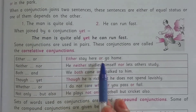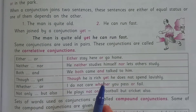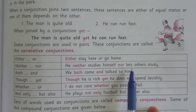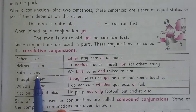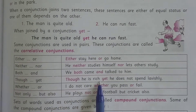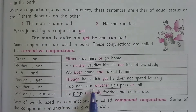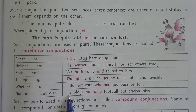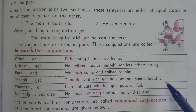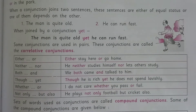Let's understand with some examples. 'Either stay here or go home' — here 'either/or' is used as a pair and is a correlative conjunction. 'He neither studies himself nor lets others study.' 'We both came and talked to him.' 'Though he is rich, yet he does not spend lavishly.' 'I do not care whether you pass or fail.' 'He plays not only football but cricket also.' These conjunctions are used in pairs and are called correlative conjunctions.